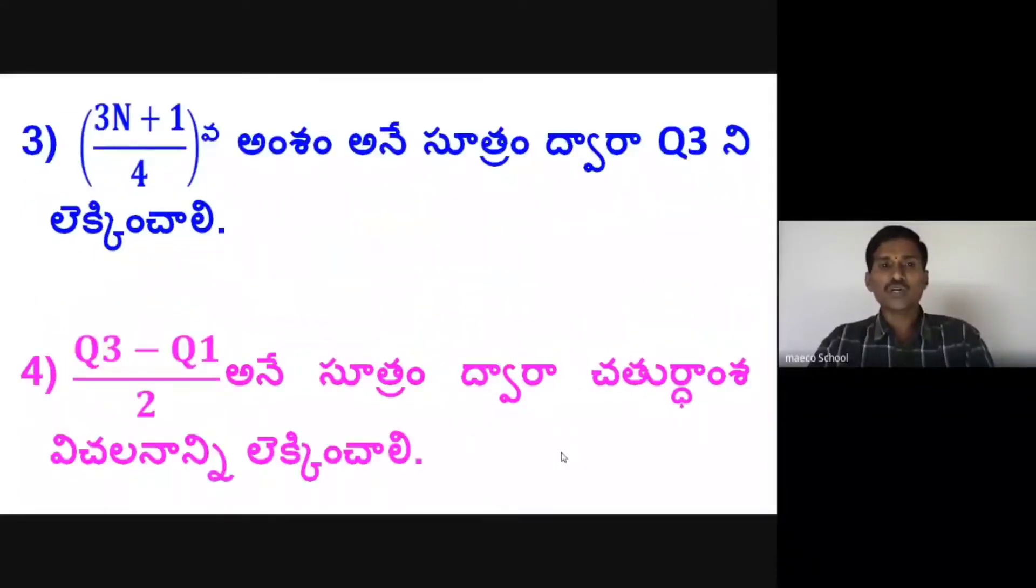The formula for Q3 is the size of 3N plus 1 by 4th item. Finally, calculate quartile deviation by using the formula Q3 minus Q1 divided by 2.